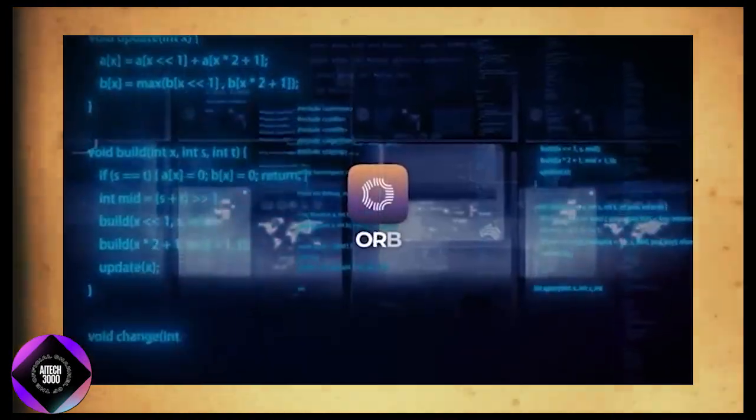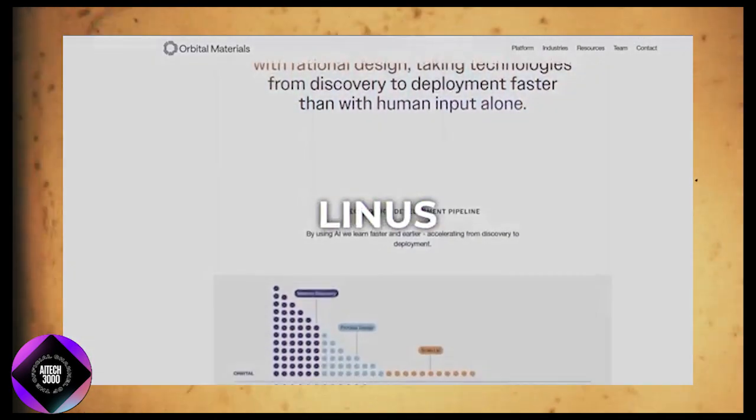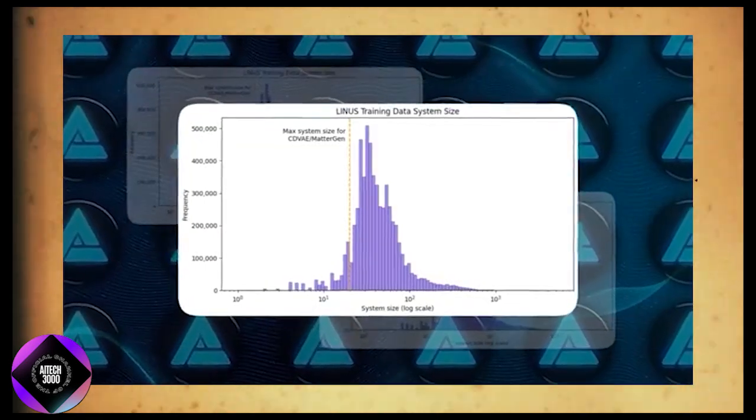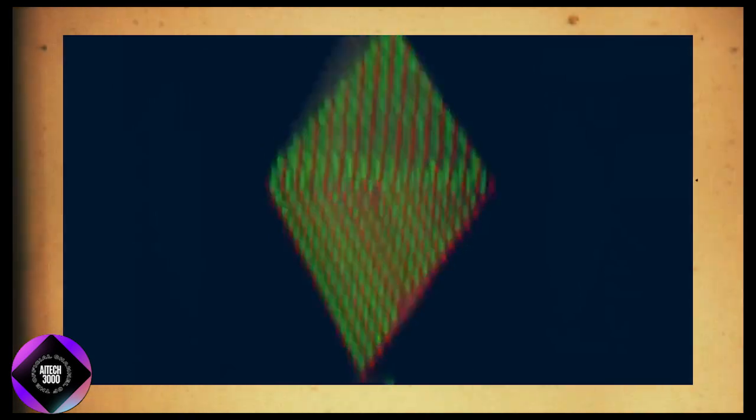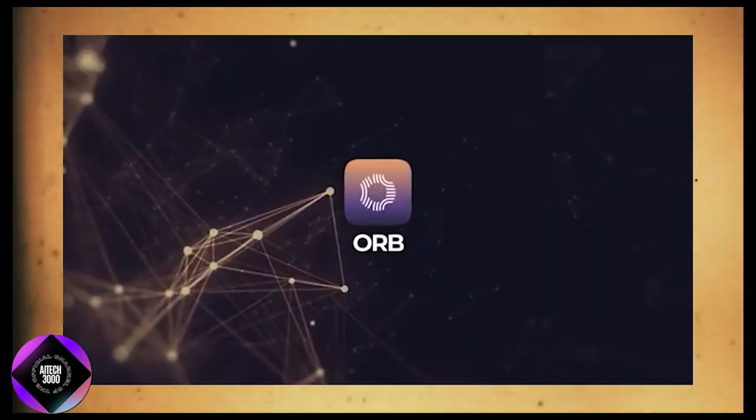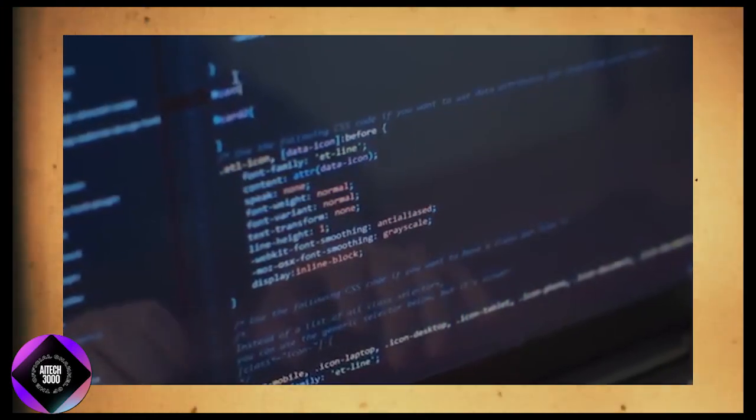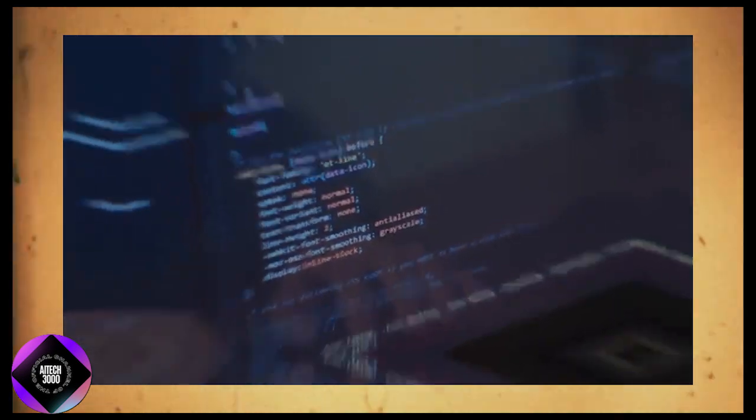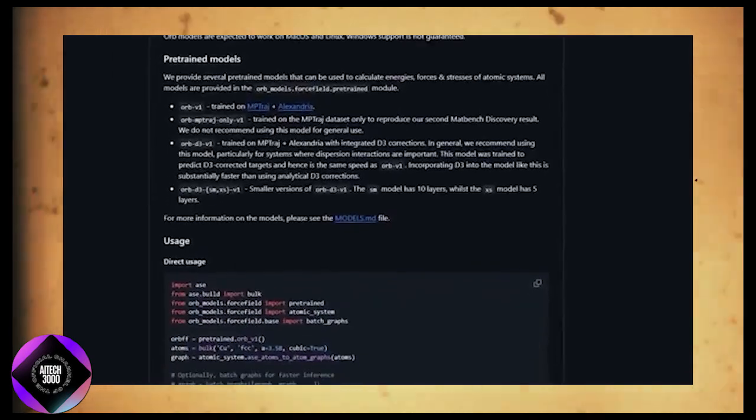Orb's development is based on a larger AI model called Linus, which Orbital has been refining for a long time. Orb is essentially a supercharged version of Linus, fine-tuned specifically for advanced material simulations. The team behind this is a small, tight-knit group competing with the biggest names in AI and they've managed to come out on top. It's proof that you don't need to be a tech giant to make groundbreaking progress.